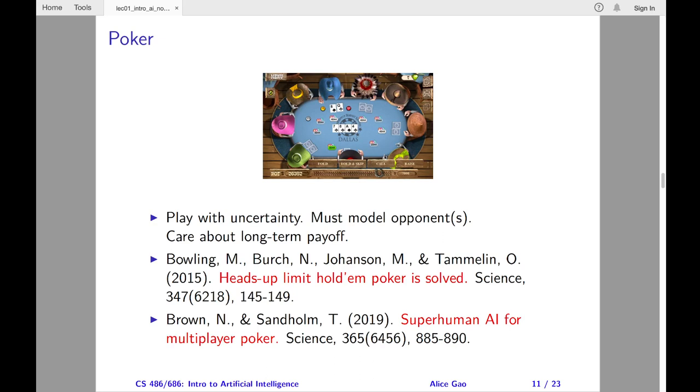The CMU team developed a program called Pluribus, which defeated elite human professionals in six players' no-limit Texas Hold'em poker. Pluribus developed its strategies as follows. It first simplified the game representation by eliminating some actions and combining some decision points. Next, Pluribus spent eight days developing a blueprint strategy. It started by playing randomly and improved by learning to beat earlier versions of itself.